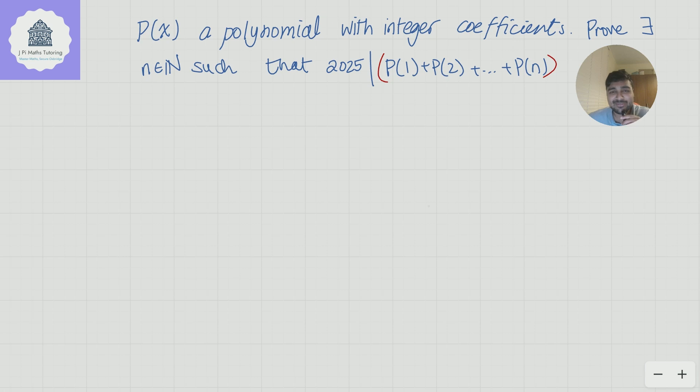Today I've got a pretty cool problem I want to share with you. We have p of x, a polynomial with integer coefficients. We want to prove that there exists positive integer n such that 2025 divides p(1) + p(2) + ... + p(n).